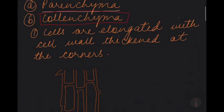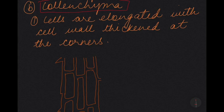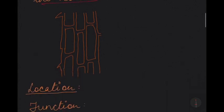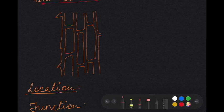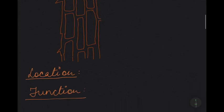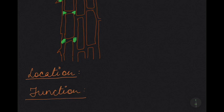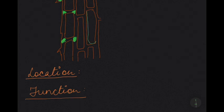Today we are going to start with collenchyma. When we talk about the structure of collenchyma, the cells are elongated with the cell wall thickened at the corners. Here I have drawn a diagram — the corners that I'm shading with green are very, very thick. The cell wall at the corner is very thick. You can see how the cells are elongated, and they have thick corners at the sides.